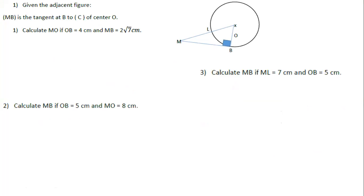Exercise number 1: given the adjacent figure, we have a figure here as you can see. MB is tangent to the circle at B, and O is the center of the circle. If MB is tangent to the circle, what does OB represent? OB is a radius, since O is at the center and B is on the circumference.